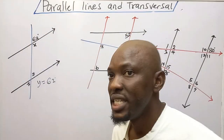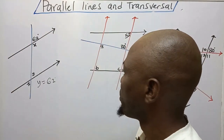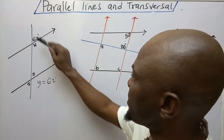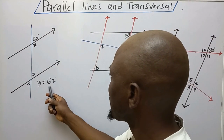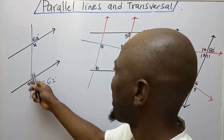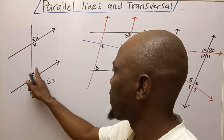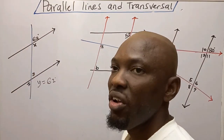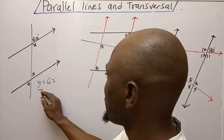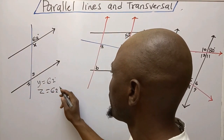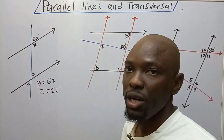So Y is equal to 62 degrees. The reason is that they are corresponding angles because they are in the same position. Now since I know that Y is 62 degrees and I have intersecting lines, the angles apart are called vertically opposite angles — they are congruent. So Z is equal to 62 degrees; the reason is they are vertically opposite angles.